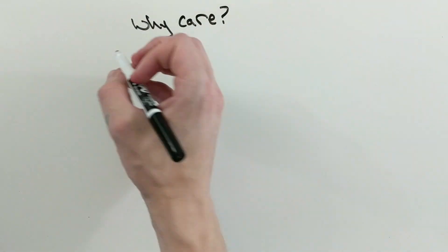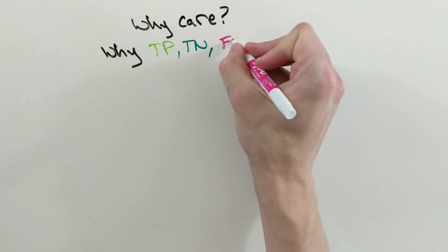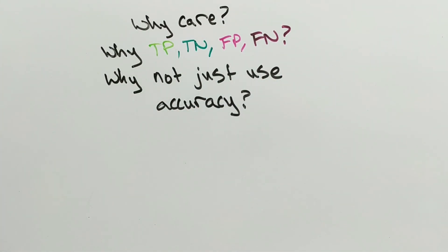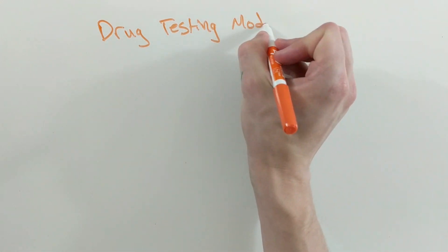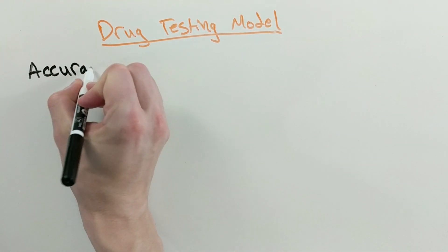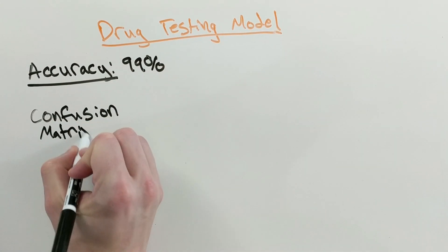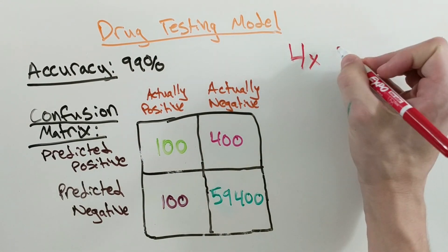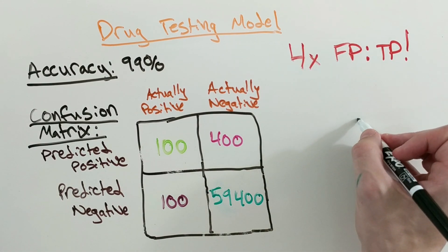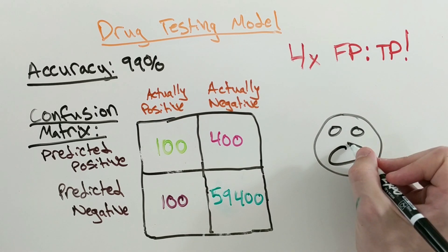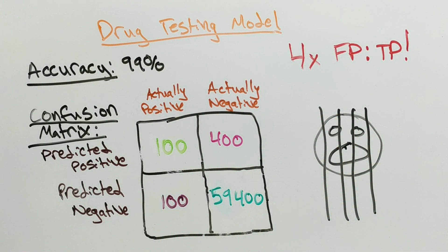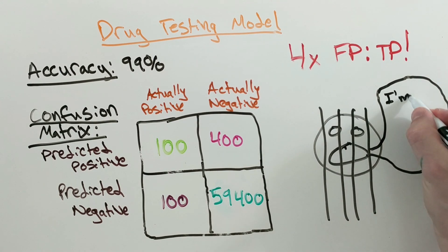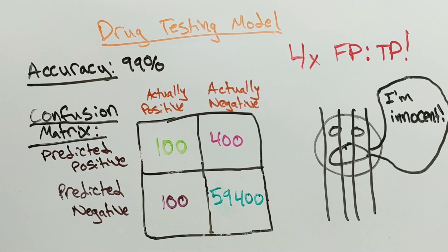Why do we care about confusion matrices? Why do we care about the individual values of true positives, false positives, false negatives, and true negatives? Because different problems care more about certain values than others. Let's say you're responsible for developing a model that does drug testing. After initial development, you see you are 99% accurate — great! However, if you look at the confusion matrix, you see that in reality you have four times as many false positives as true positives. That means if every person who tests positive gets thrown in jail, four out of every five people — or 80% — are actually innocent. So you have to carefully consider your evaluation metrics and always double check the confusion matrix for weird or interesting results.